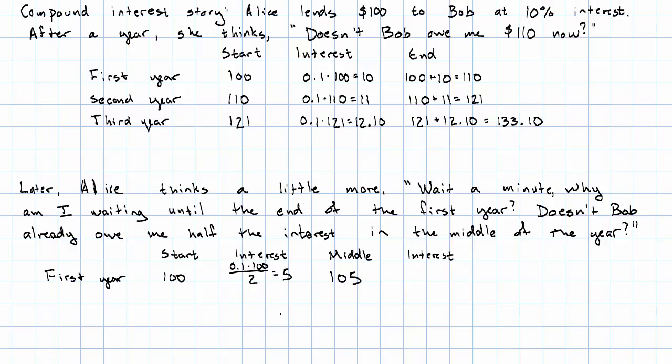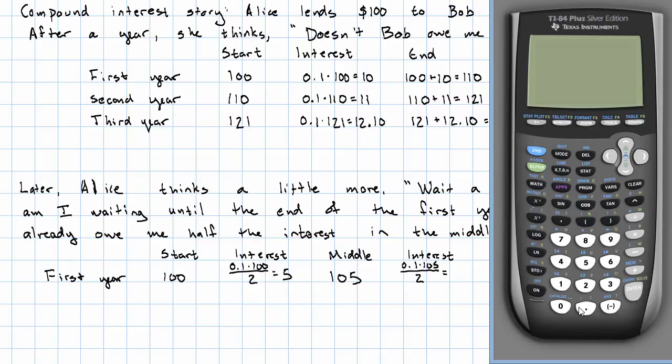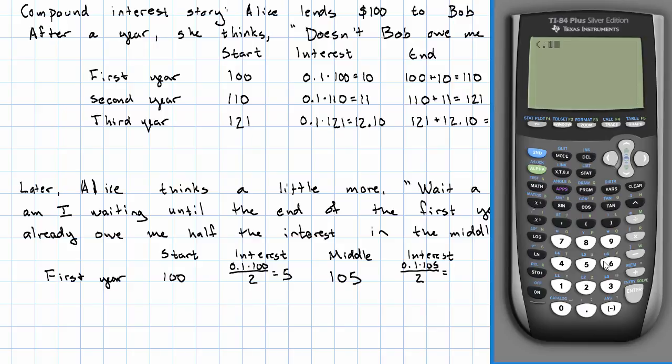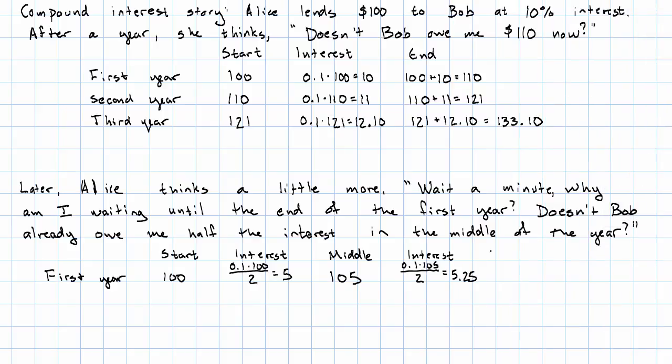And so in the rest of that first year, Bob isn't just paying interest on the $100. He also has to pay interest on that $5 of interest. So $0.1 times $105 all over 2. That's $5.25.